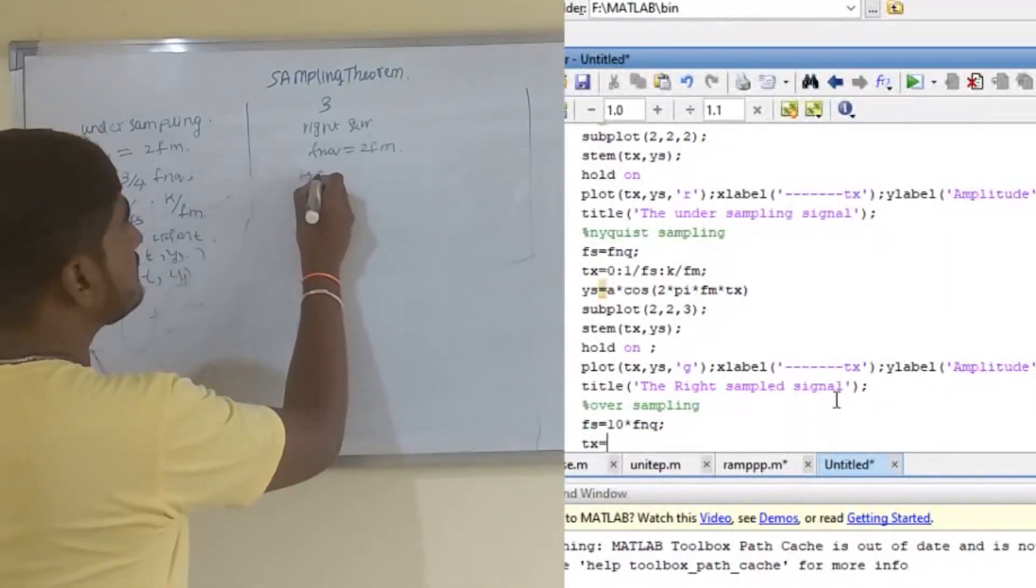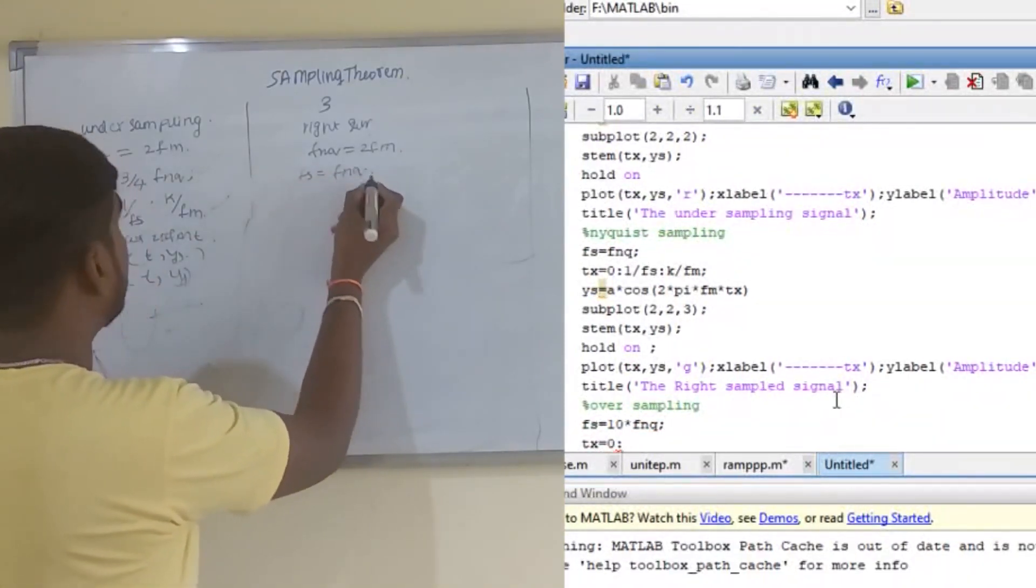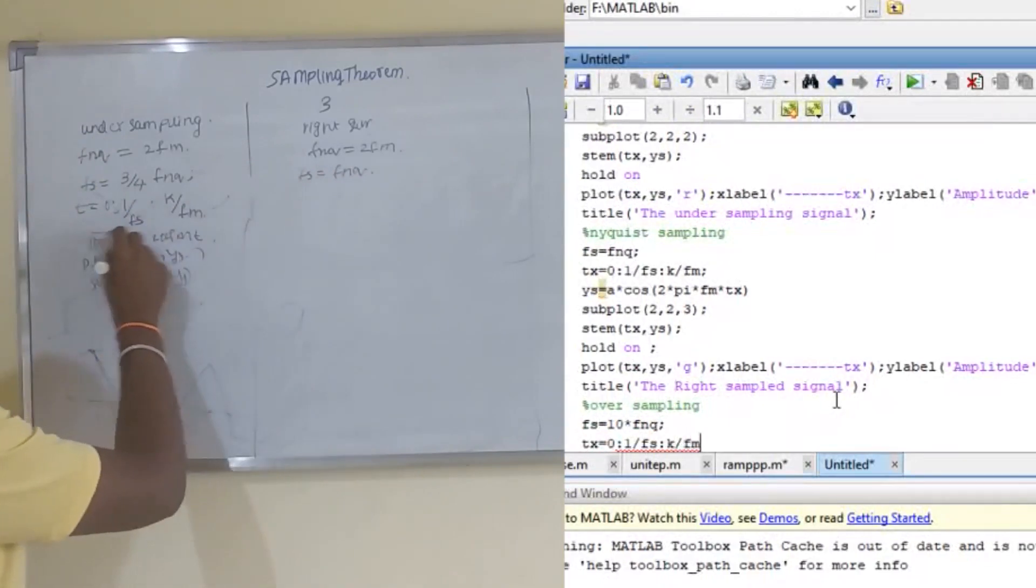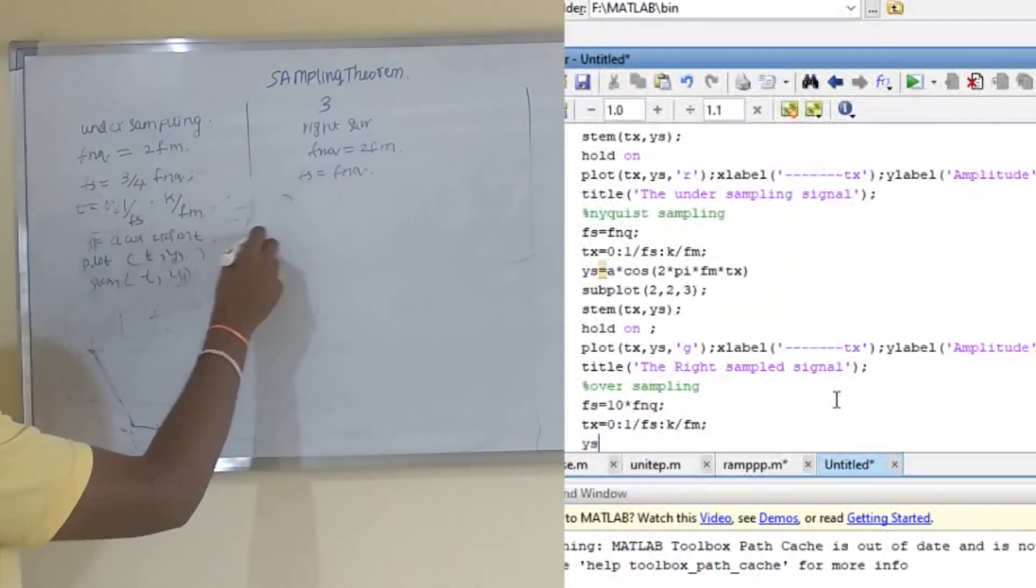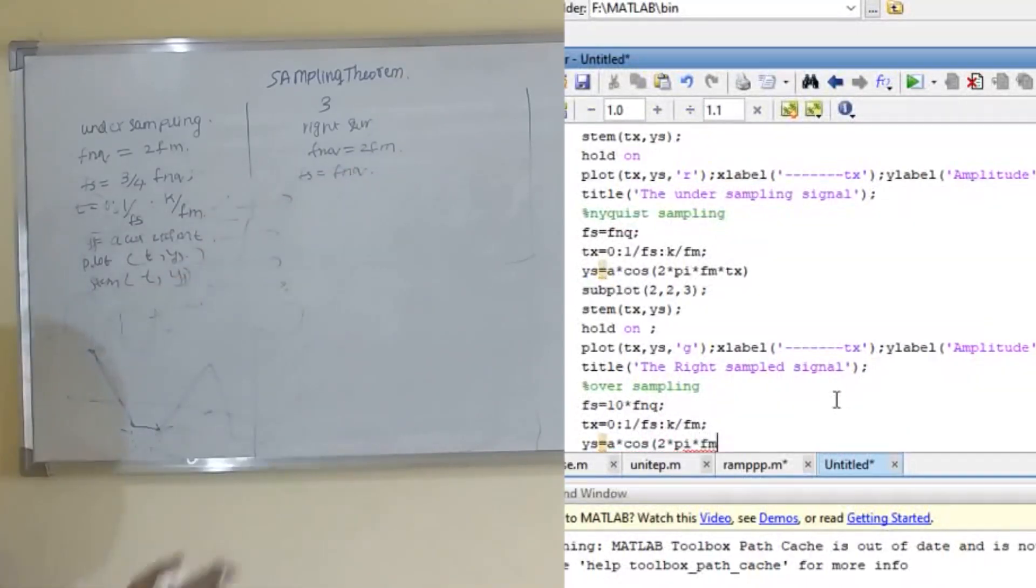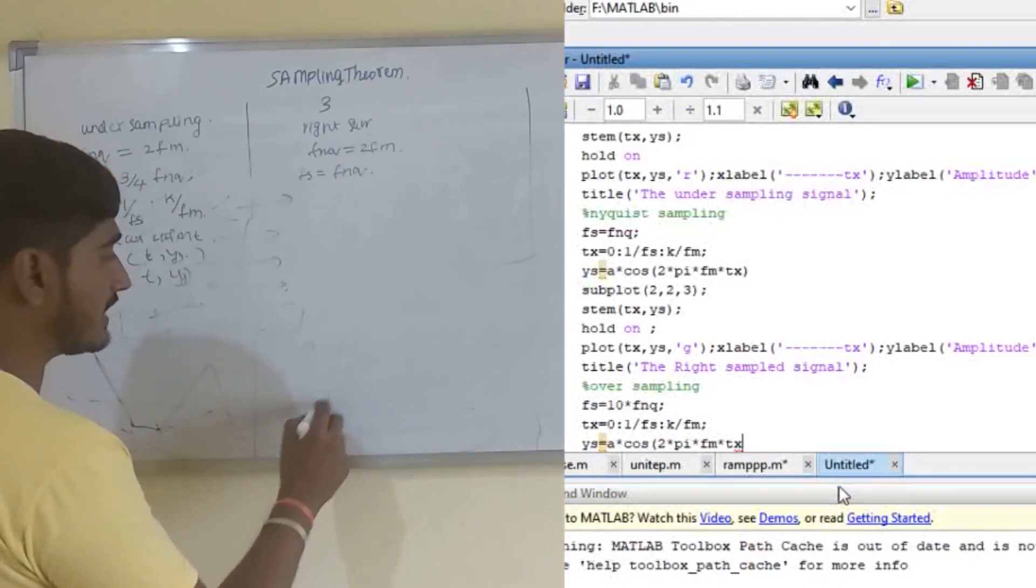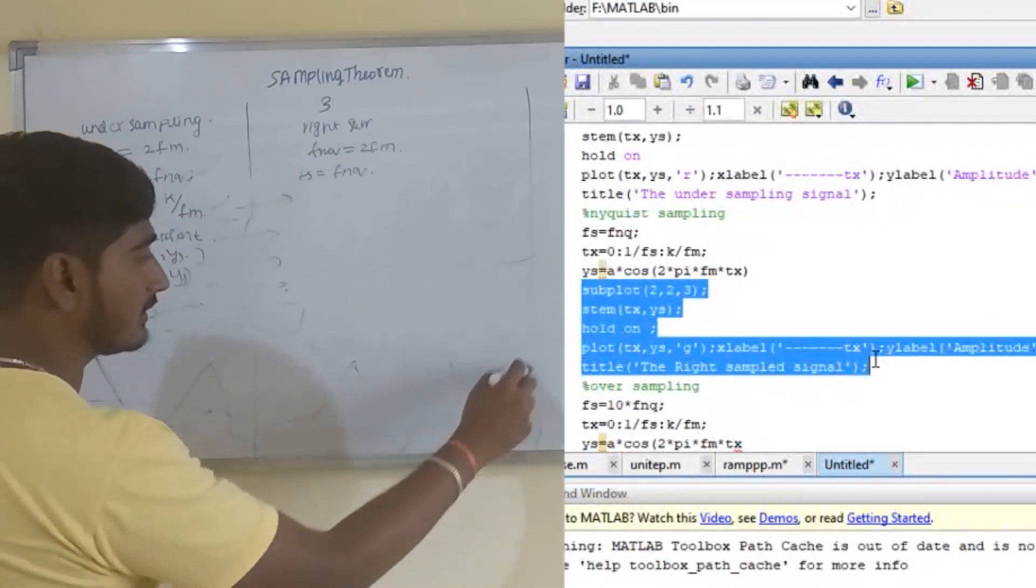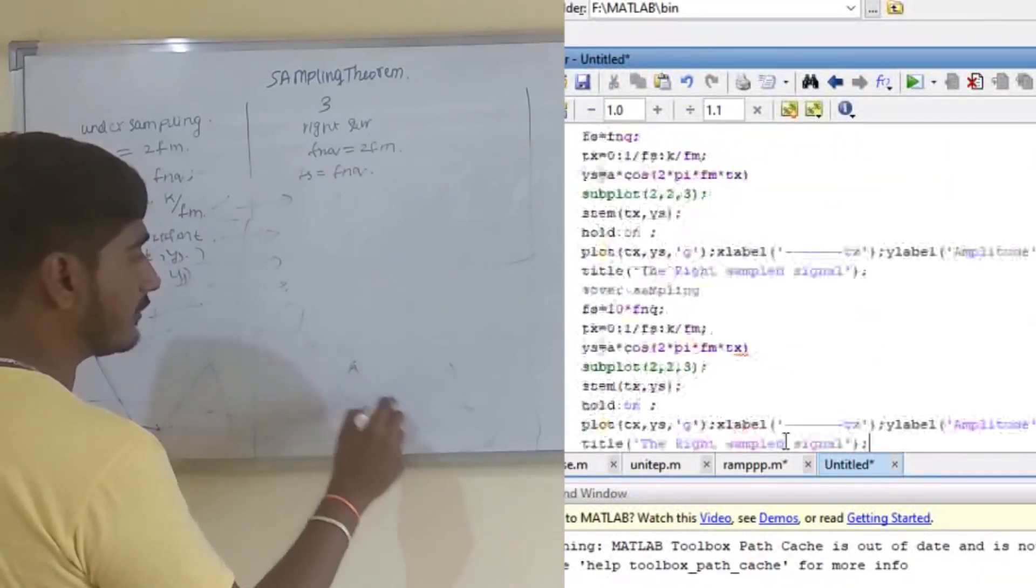Here we will use Fs equal to Fnq and do all of the procedure same as here, same carrying this one. Plot stem X axis and Y axis. If we sampled at the rate of 2Fm, the signal we got is a perfect signal. We will get 10 outputs. Now for oversampling.